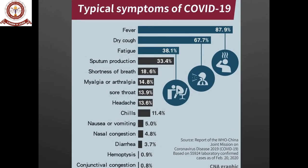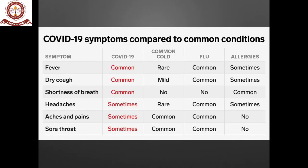In terms of percentages: fever occurs in 87.9% of cases, dry cough in 67.7%, and fatigue in 38.1%. In a comparison between COVID-19, common cold, flu, and allergies: fever and dry cough are common in COVID-19; shortness of breath is also common in COVID-19 but not seen in common cold or flu, though it can occur with allergies. This helps differentiate COVID-19 from other conditions.